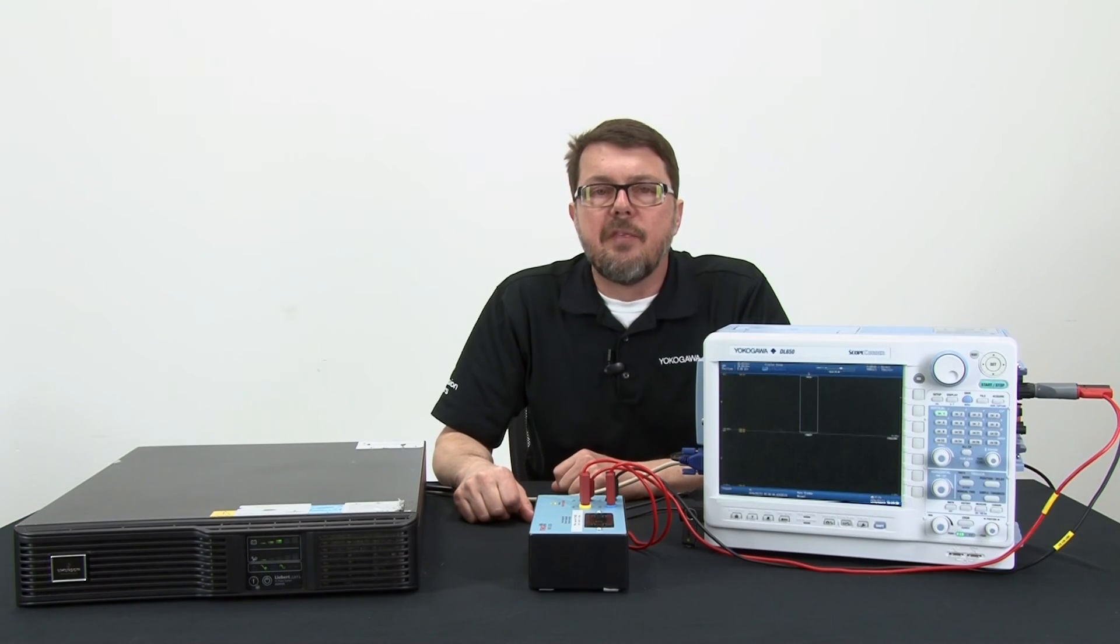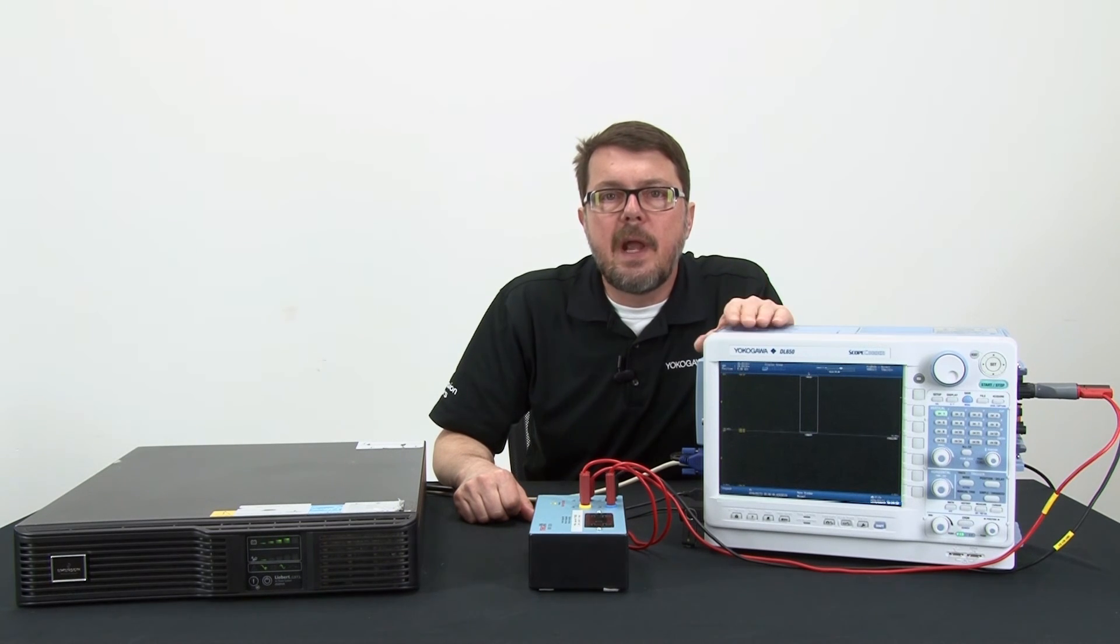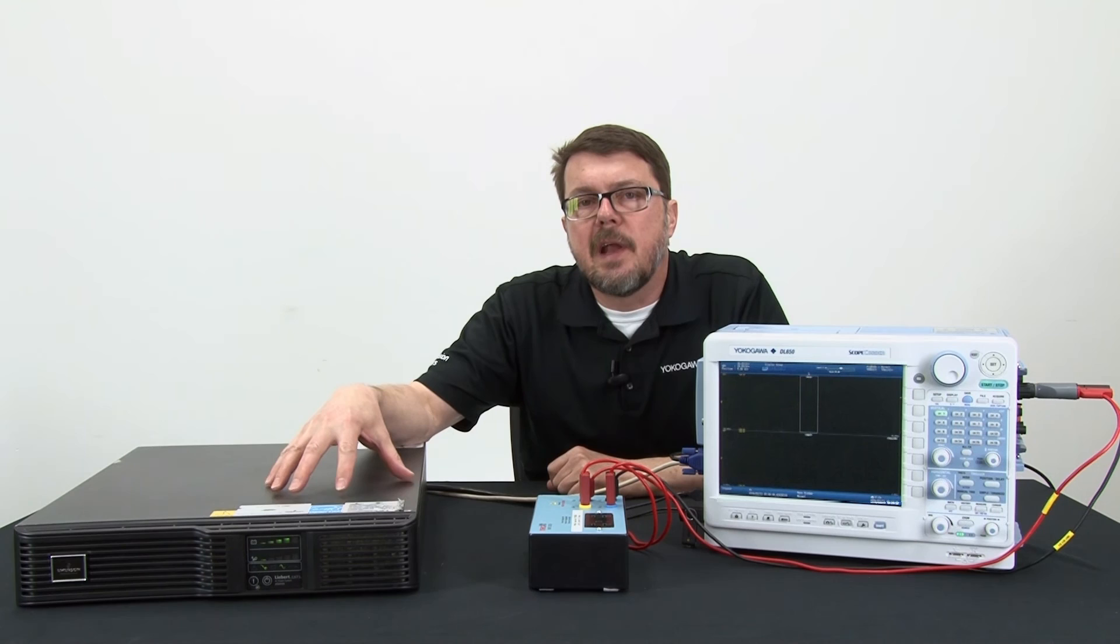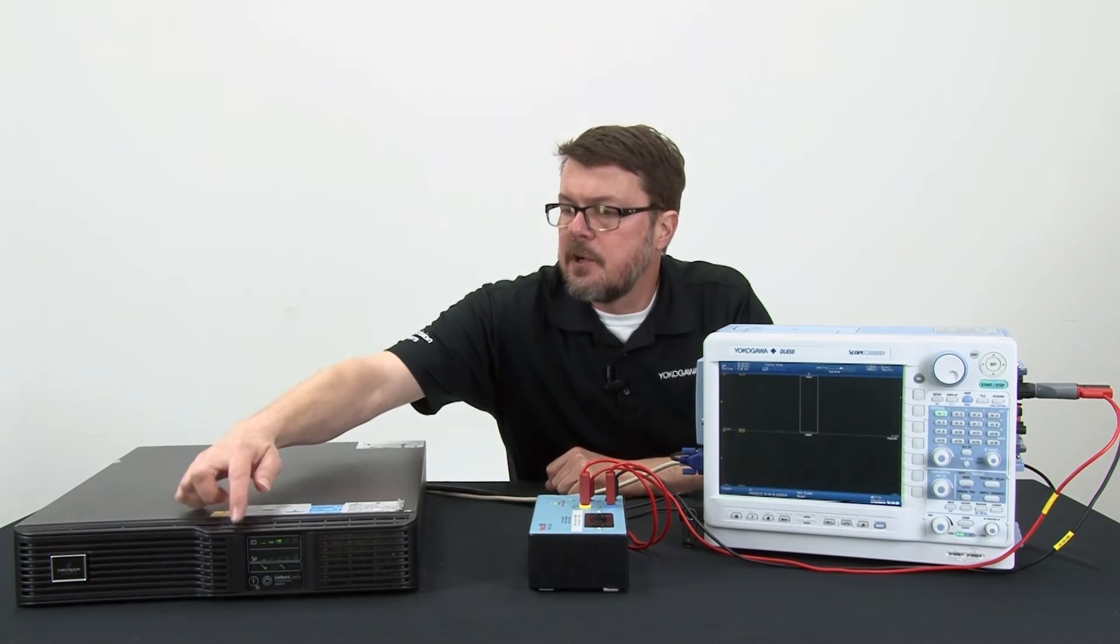Now I'm ready to run the test. The scope trigger is armed and waiting. All I have to do is force the UPS to switch over to its internal battery and inverter. This will simulate the grid dropping out. Here we go.